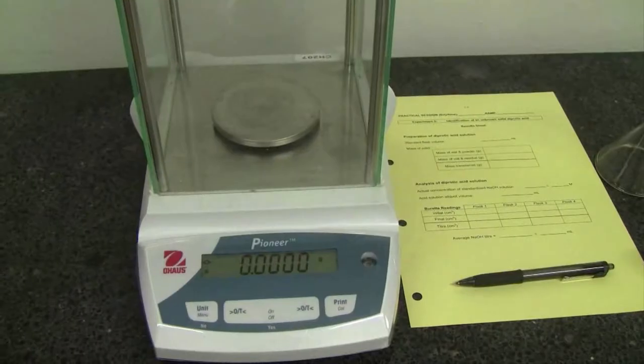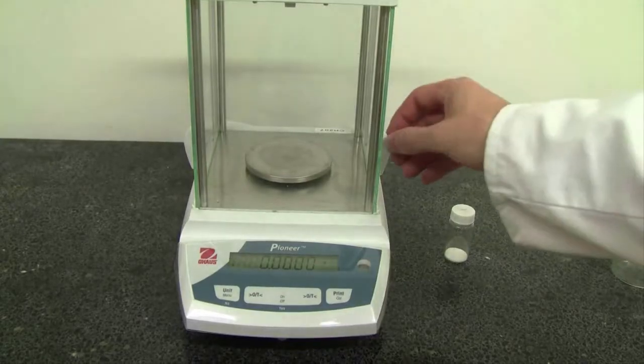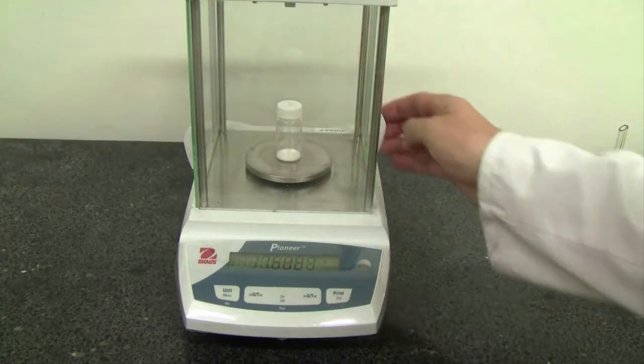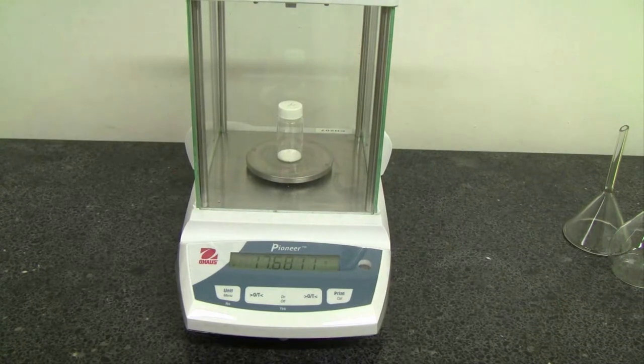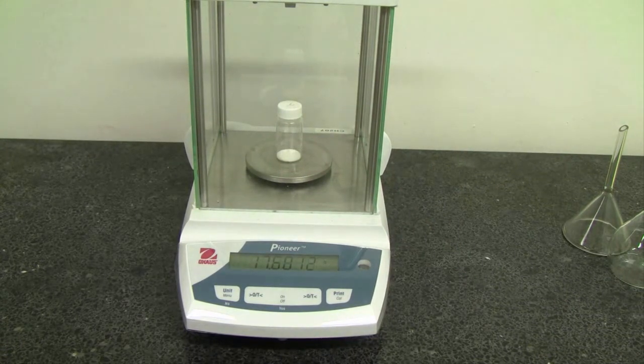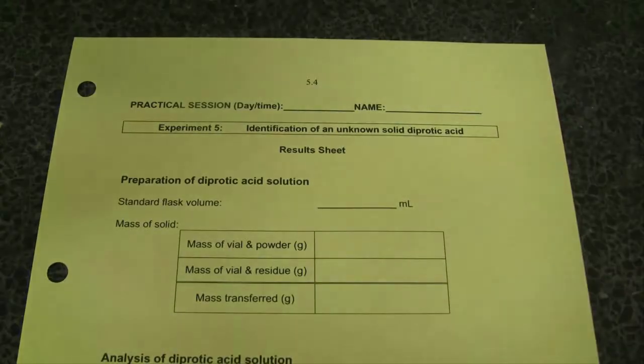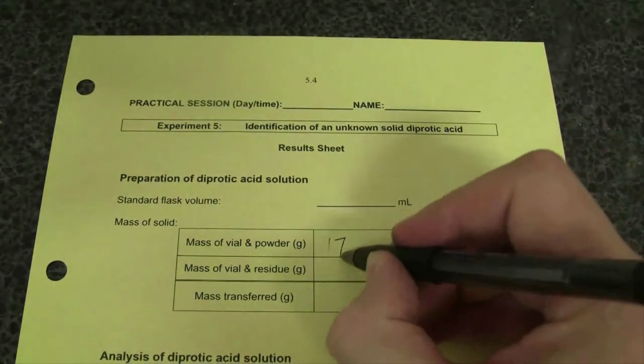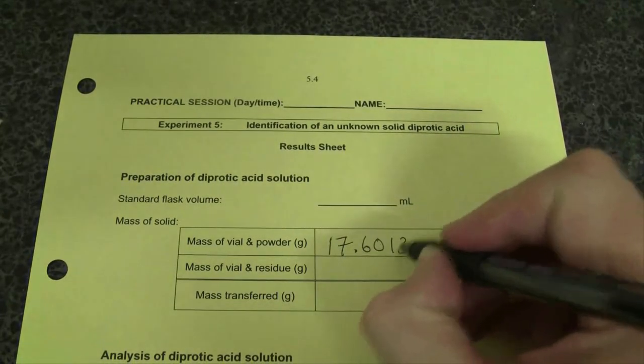Right, ready to weigh by difference. We zero the analytical balance with all the doors shut, then carefully slide open a door, place your sample with the lid on in the balance, and give it a moment for that mass to stabilize. Once it's stabilized, we record that mass accurately to four decimal places. So in this case, 17.6013 grams.